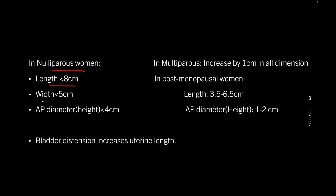In nulliparous adult women, the length of the uterus is usually less than 8 centimeters, width is usually less than 5 centimeters, and its anterior-posterior diameter or height is usually less than 4 centimeters. Parity generally increases the size by 1 centimeter in each dimension.